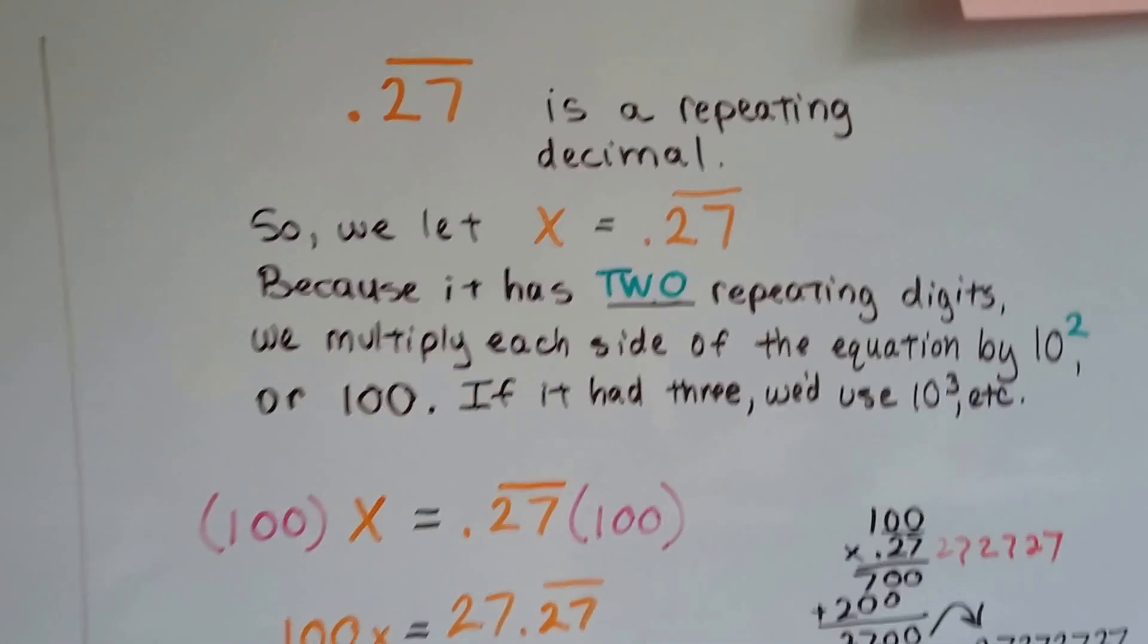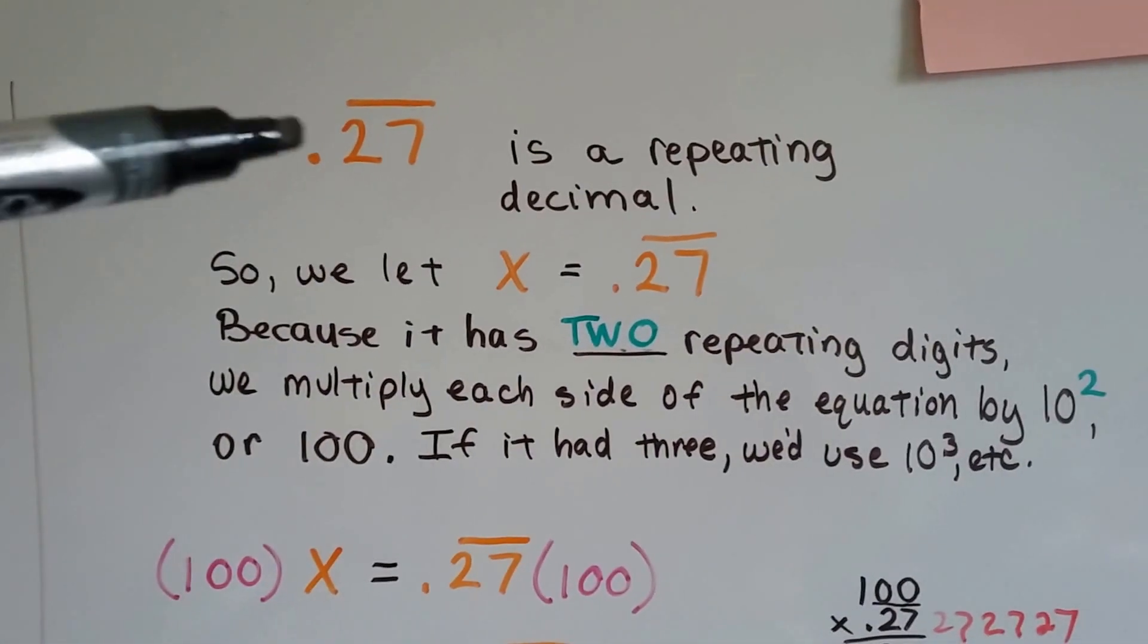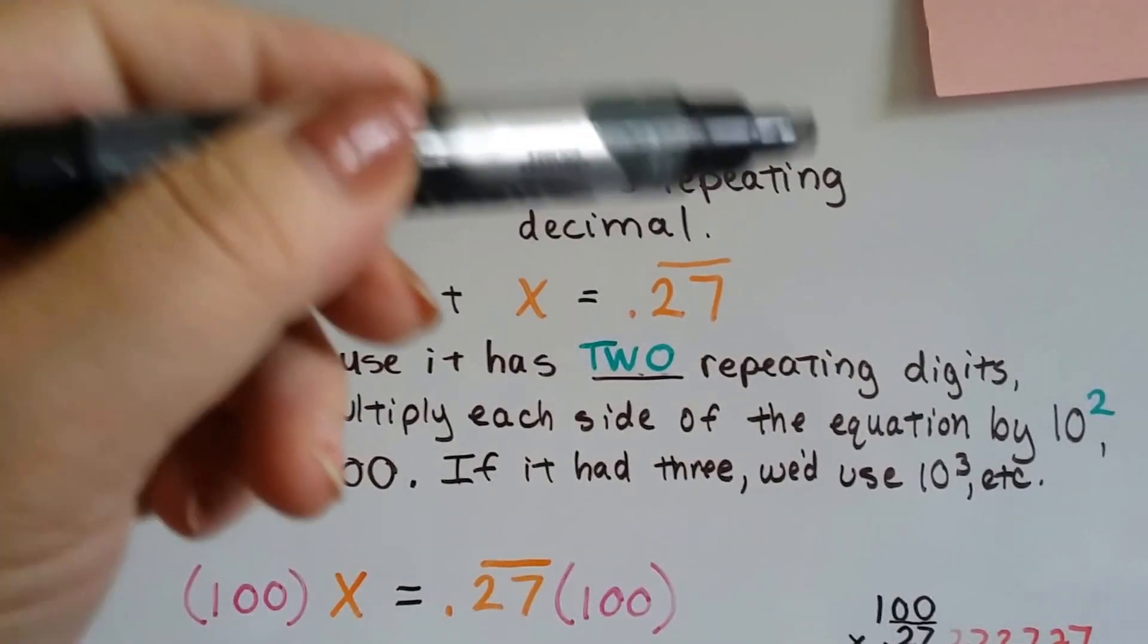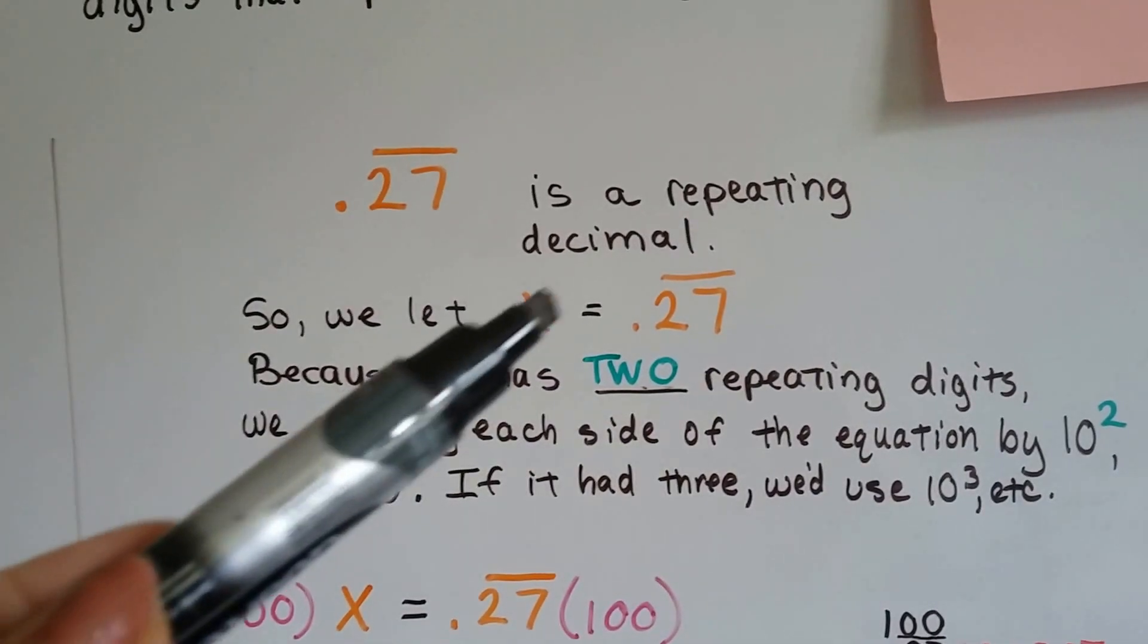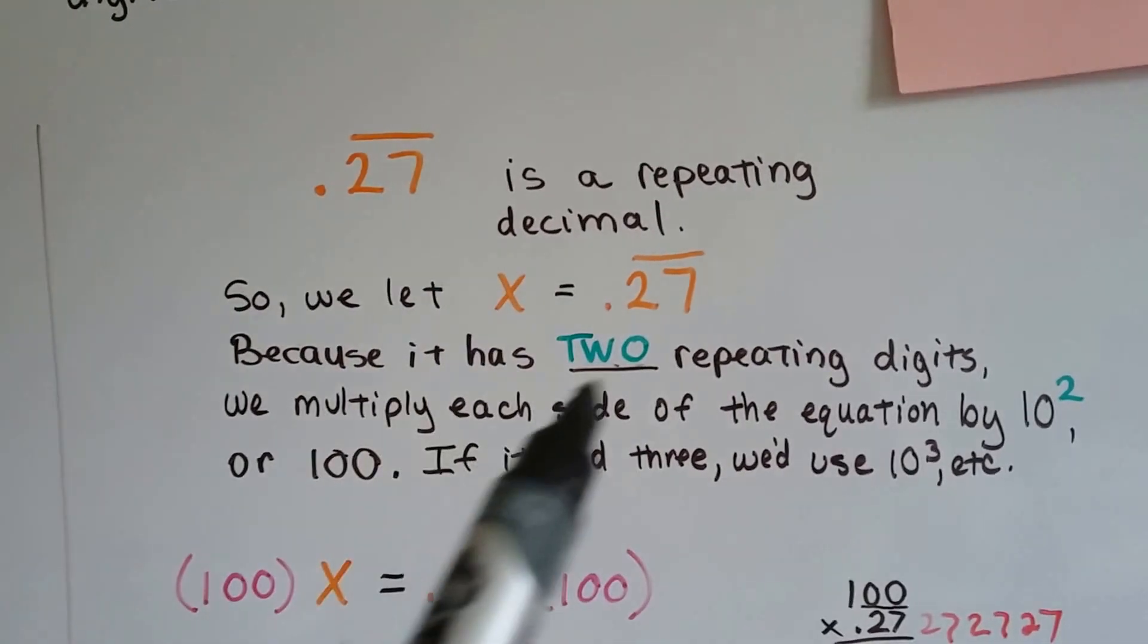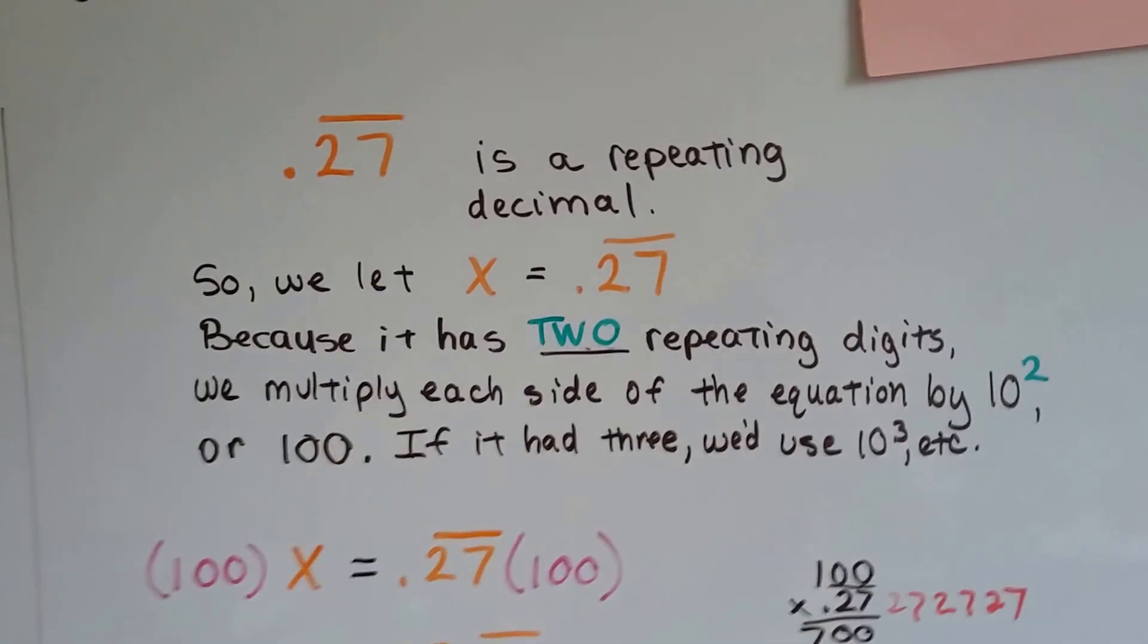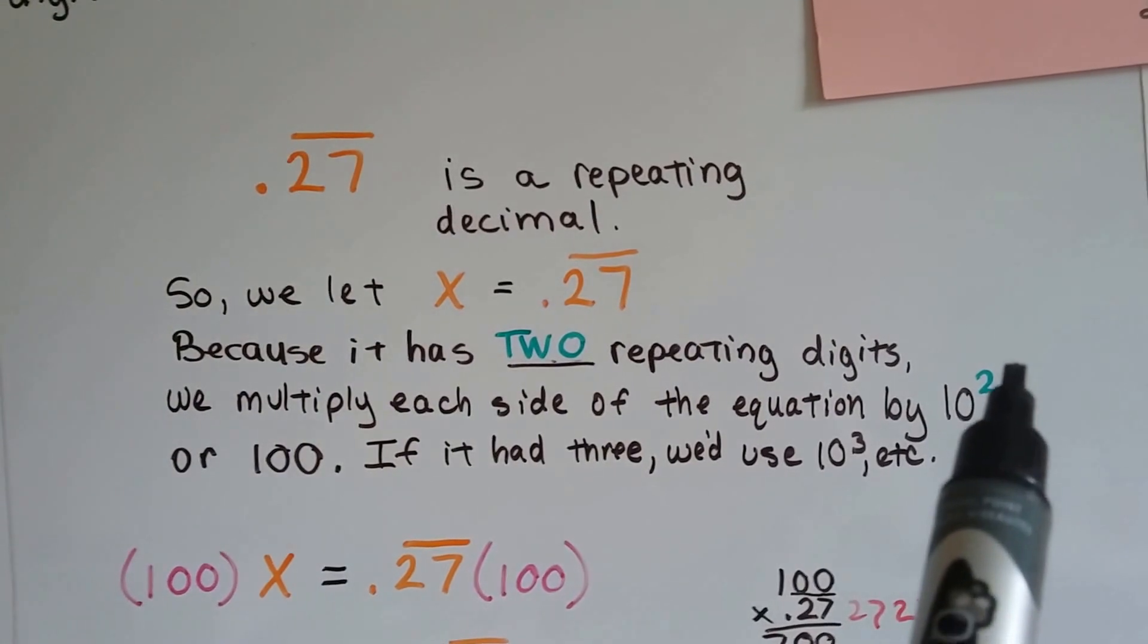But what do we do when it's a repeating decimal like .27? Well, what we do is, we know that this is .27272727, and it just keeps on going. So we put the bar over the top. Well, we're going to let x equal .27 with that bar over the top. That's going to be our equation. Now, because it has two repeating digits, .272727, we're going to multiply each side of this equation by 10 to the second power.